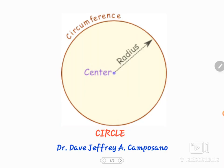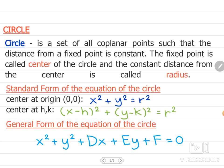Hello, good day to all of you. Our topic for the discussion today is all about circles. First of all, we need to define what a circle is. A circle is a set of coplanar points such that the distance from a fixed point is constant. The fixed point is called the center of the circle, and the constant distance from the center is called the radius.